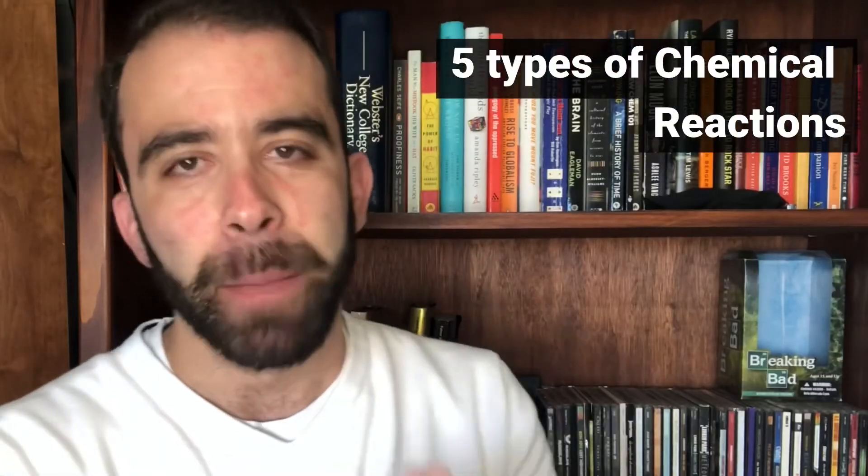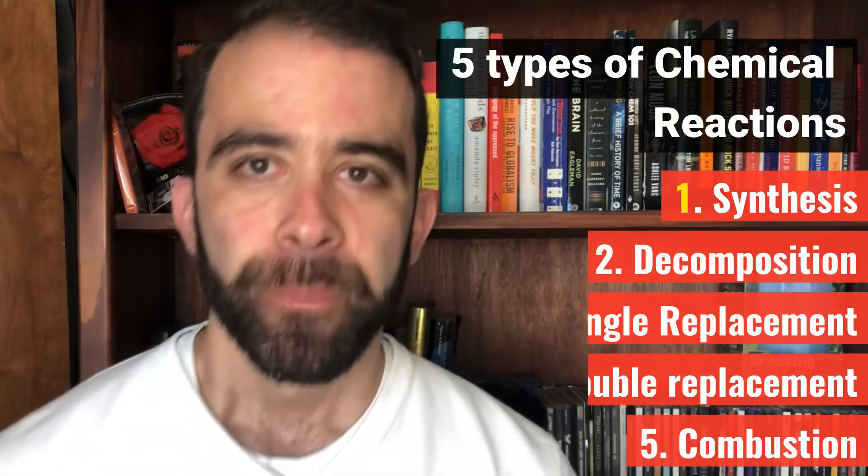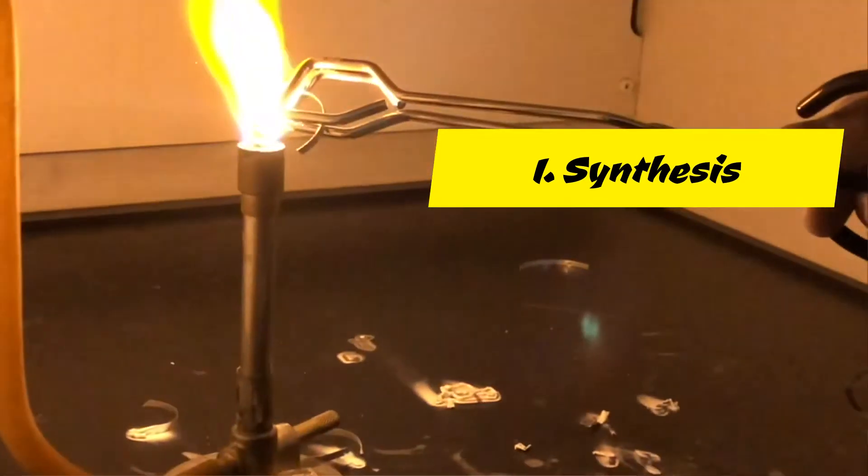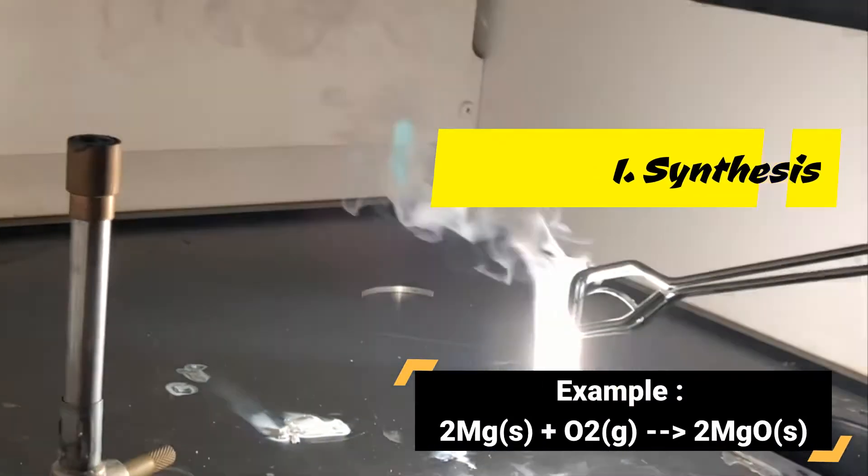Now that we've learned the nuts and bolts of what a chemical equation is and what it entails, there are different types of chemical reactions, subcategories. We're going to learn about five. Number one: synthesis reaction. Two become one. One reactant reacts with another reactant to make one product. For example, magnesium reacts with oxygen to produce one product, magnesium oxide. It's synthesis because you got two reactants making one product.